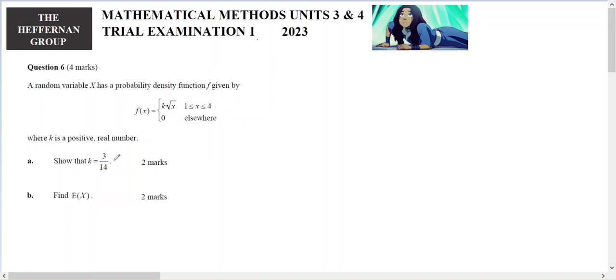So in part A, to show that question, I've got to come up with k equaling 3 on 4 by myself. Since it's a probability density function, then the integral from 1 to 4 of k x to the half dx should equal 1.